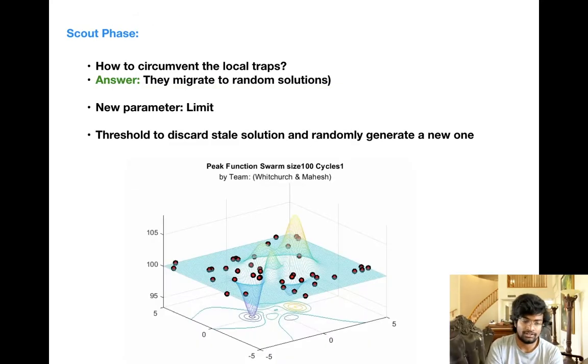Every solution has a trial counter associated with it. If a bee doesn't update its solution for a certain amount of cycles, then it has to discard that position and go to a new position - it's basically like mutation in genetic algorithms. The number of cycles you have to wait before you discard is a parameter in this algorithm called limit, and it's completely up to us to decide how far we want to wait before we discard a solution.